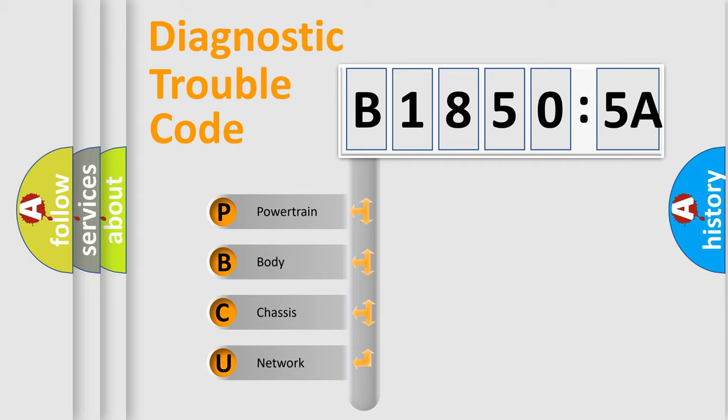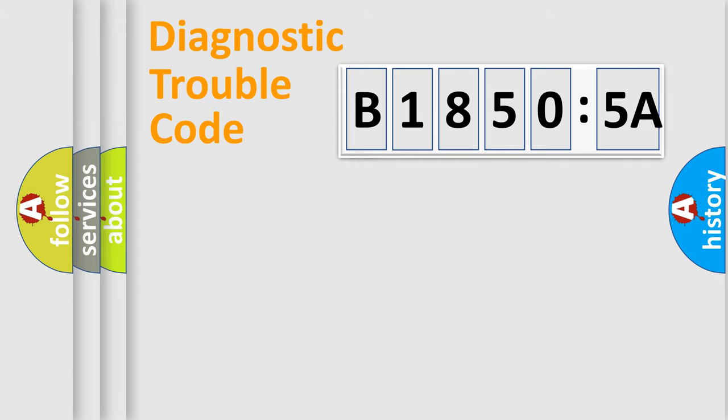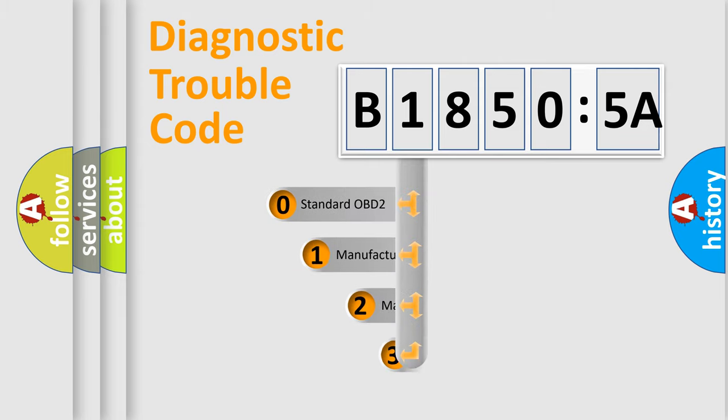We divide the electric system of automobile into four basic units: Powertrain, body, chassis, network. This distribution is defined in the first character code.